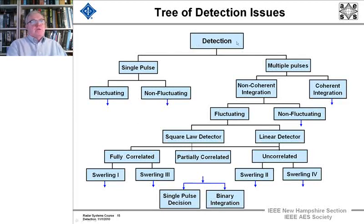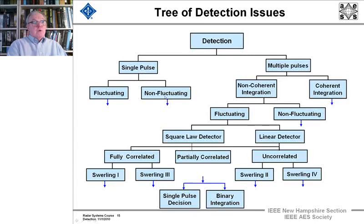The detection process can be broken down into two areas. First, are we detecting a single pulse or multiple pulses? Earlier we looked at a single pulse that was non-fluctuating — a single pulse that was transmitted where the target was non-fluctuating; it was a steady target.